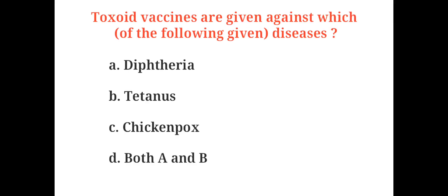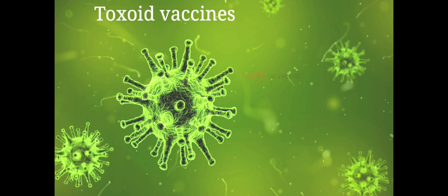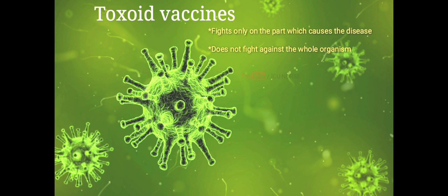Toxoid vaccines are given against which diseases? A. Diphtheria, B. Tetanus, C. Chickenpox, D. Both A and B. And the correct answer is D. Both A and B. Toxoid vaccines use a toxin, a harmful product made by the germ that causes a disease. They create immunity to the parts of the germ that cause disease instead of the whole germ itself, meaning the immune response is targeted to the toxin and not the whole germ.